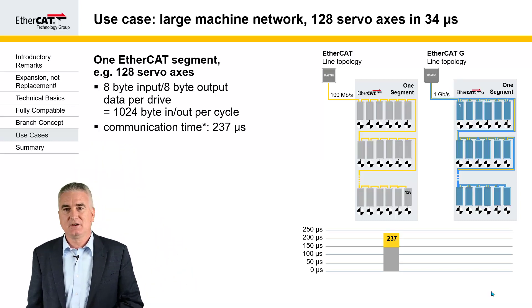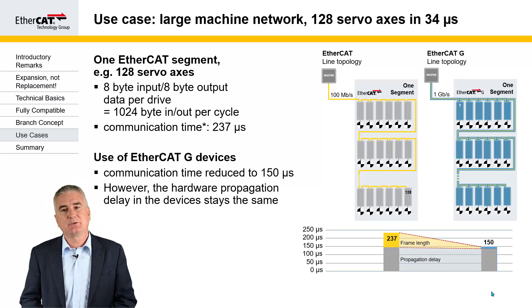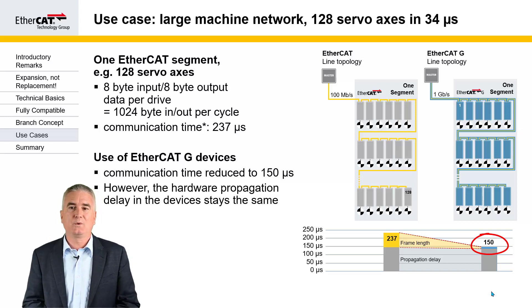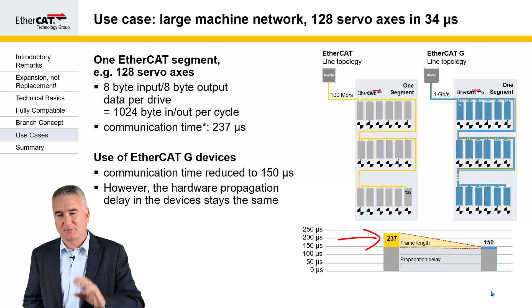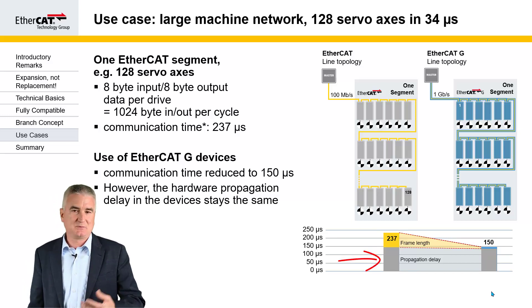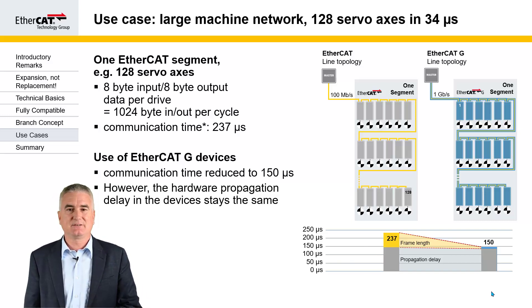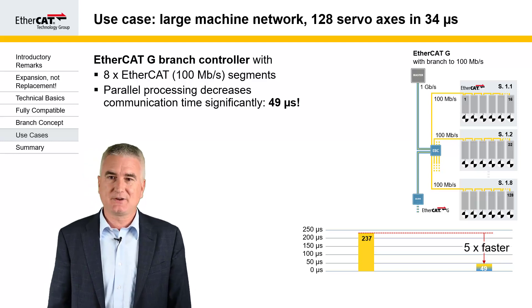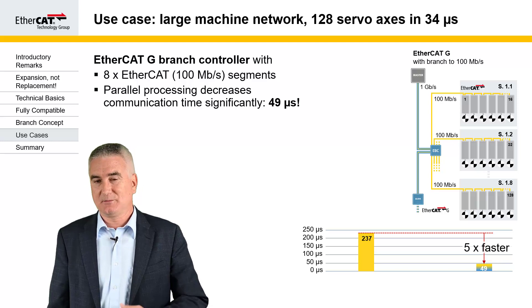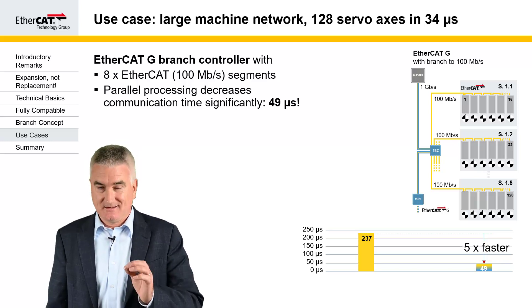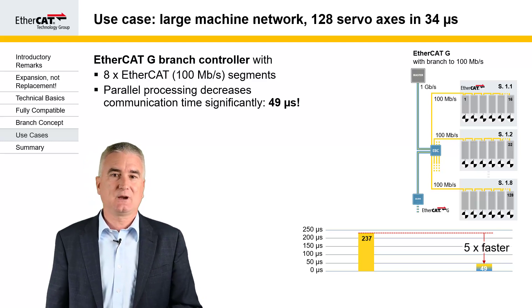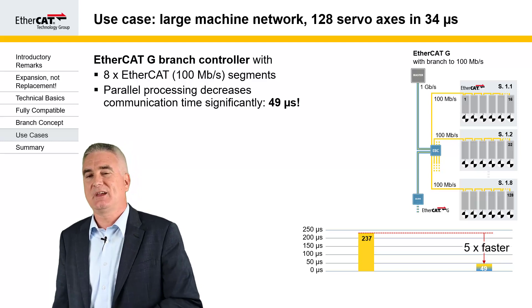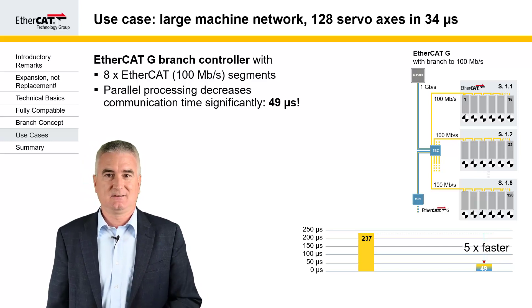If we go with gigabit throughout, we win, but only a little bit. The communication time is reduced to about 150 microseconds because the propagation delay remains pretty much the same — we only win on the frame length. The frame becomes shorter, but the propagation delay time remains similar to 100 megabit, so the gain with regards to communication time is not very convincing. However, if we introduce the branch controllers and split our network into 8 sub-segments, we win a lot. The communication time goes down by a factor of 5, and we still use the same 100 megabit drives as before. We just run the 8 segments in parallel and this gives us a lot of performance improvement.